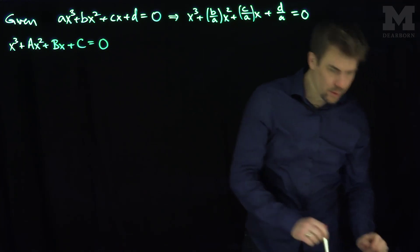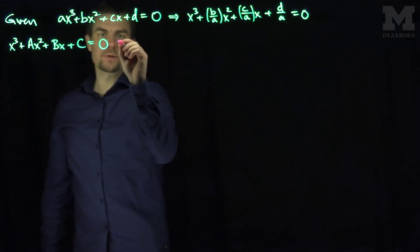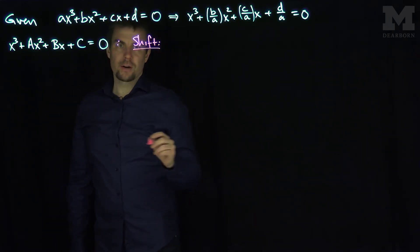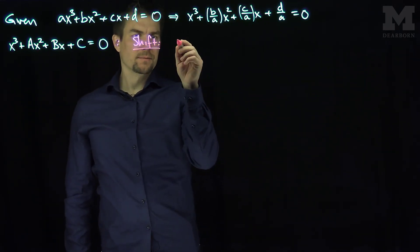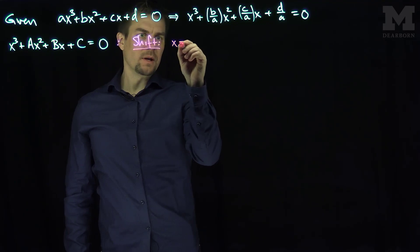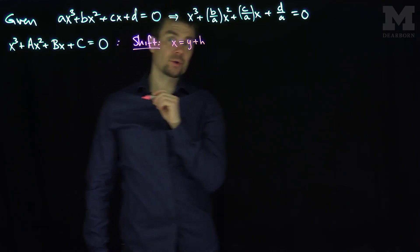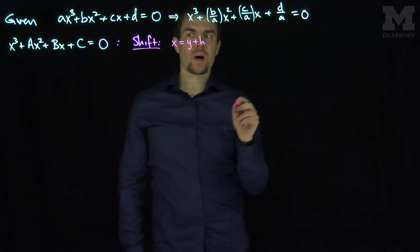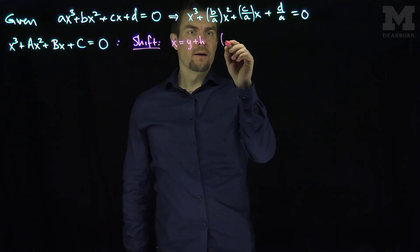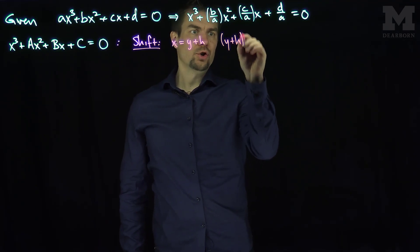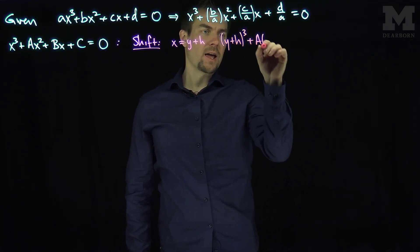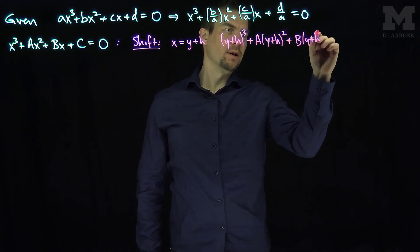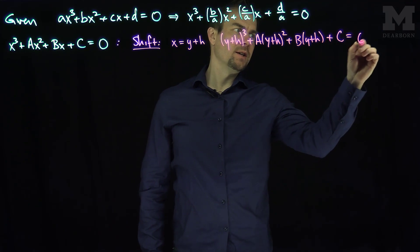The first thing we're going to do is shift. What we'll do with our shift: we're going to let x = y + h. So h is going to be the first parameter of our problem. If we plug in x = y + h, what we'll get is: (y + h)³ + A(y + h)² + B(y + h) + C = 0.